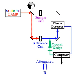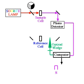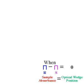And when the signals are equal, the amount of wedge needed to produce this zero signal difference is a measure of the analyte absorption. Since the computer controls the wedge and knows its position exactly, it converts wedge position to an absorbance reading of the sample.